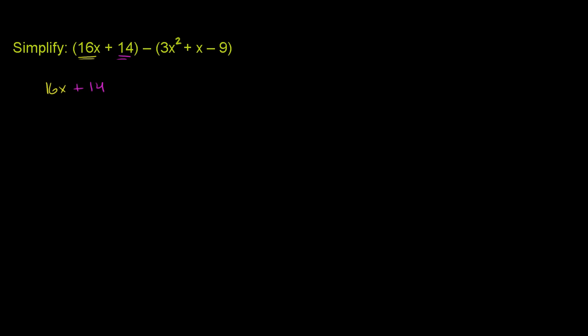And then we can subtract from that. We can just distribute this negative sign. So instead of having a positive 3x squared, if we multiply it times this negative 1, it is minus 3x squared.